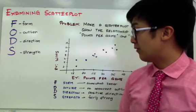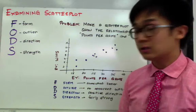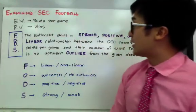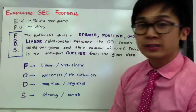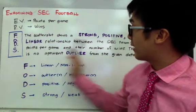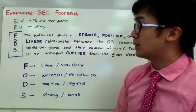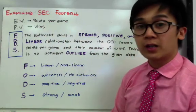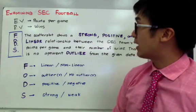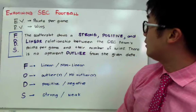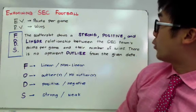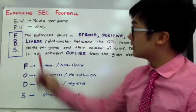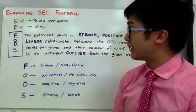And if we're just going to look at this particular scatterplot, we would say that it's fairly strong based on the individual dots that are getting closer and closer together as we are looking at it in our scatterplot. So that is how we interpret two bivariate data and its relationship using our new acronym, which is FODS, form, outlier, direction, and strength. When we are examining the relationship between the two bivariate data, we always need to write it out in paragraph form. So if we're going to transform our FODS into a more comprehensive description of your scatterplot interpretation, we would say that the scatterplot shows a strong, positive, and linear relationship between the SEC team's points per game and their number of wins. There's no apparent outlier from the given data set. And this is how we usually write our interpretation when we are looking at a scatterplot.